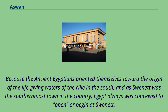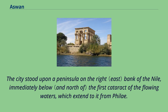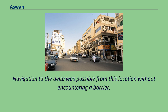Because the ancient Egyptians oriented themselves toward the origin of the life-giving waters of the Nile in the south, and as Swenet was the southernmost town in the country, Egypt was always conceived to open or begin at Swenet. The city stood upon a peninsula on the right bank of the Nile, immediately below the first cataract, which extended to it from Philae. Navigation to the delta was possible from this location without encountering a barrier.